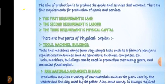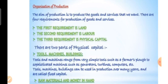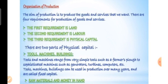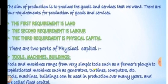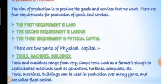Most of the people in villages are engaged in production activities — production of goods and services. There are four major requirements for the production of goods and services: the first is land, second is labor, third is physical capital, and fourth is human capital.